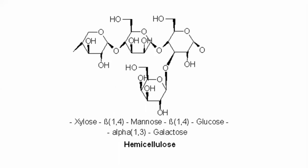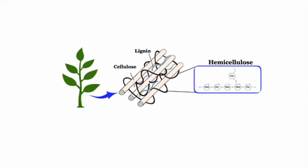Hemicellulose is made up of different monosaccharide units: xylose has beta-1,4 linkages with mannose, mannose has beta-1,4 linkages with glucose, and galactose is attached via alpha-1,3 linkages. All these units are held together through different linkages, forming the hemicellulose structure. As compared to cellulose's straight chain, hemicellulose is a highly branched and shorter structure, containing monosaccharide units ranging up to approximately 3,000. It is also a main structural component of the plant cell wall.